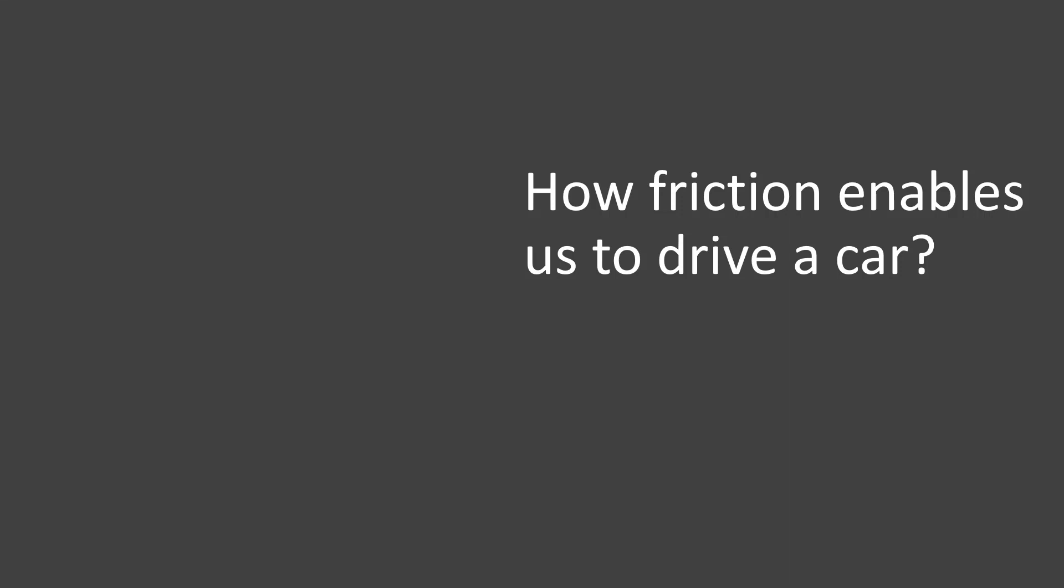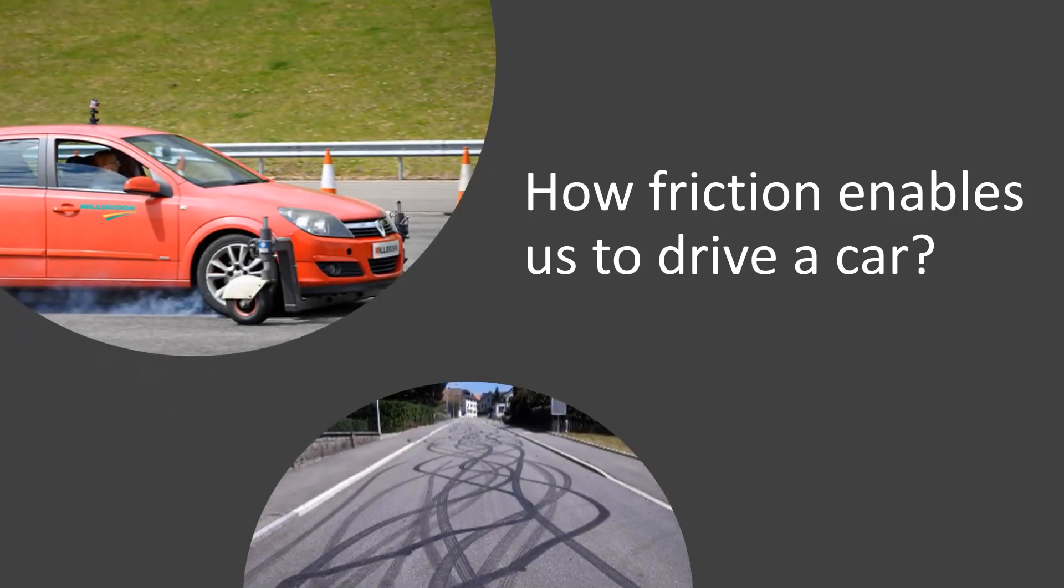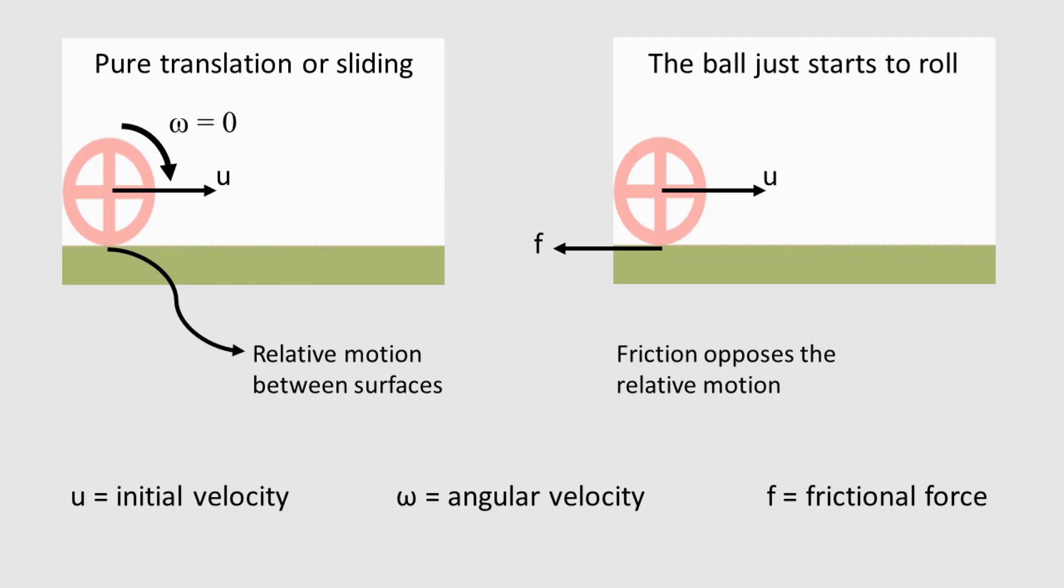Now let's understand how friction helps us to drive a car. To understand this, we should first start by understanding what is rolling. For example, let us take a rolling ball. We say the ball is purely rolling when there is no relative motion between the surface of the ball in contact and the floor at any instant of time. How does this happen? Interestingly, friction makes this happen.